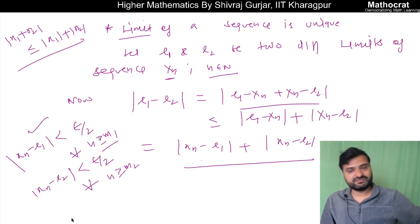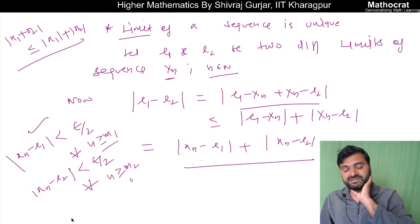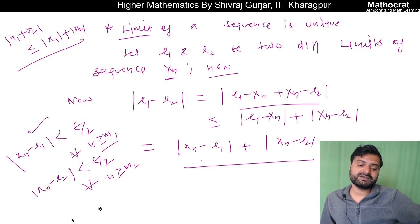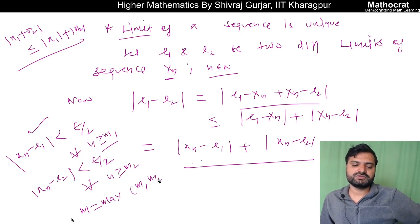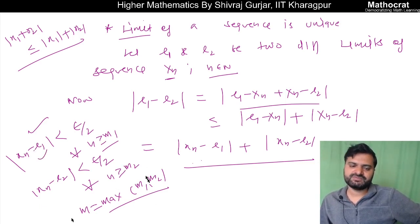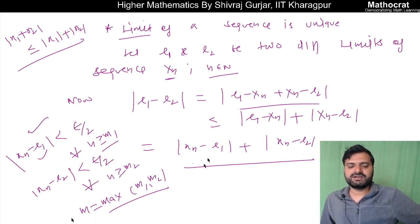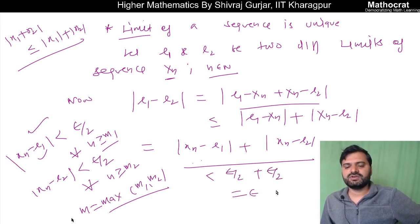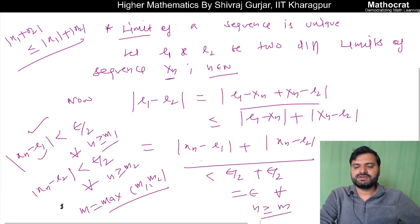The first condition is valid for natural numbers greater than m1, and the second for greater than m2. So if we take a natural number m equal to maximum of m1 and m2, then for all n greater than or equal to m, both conditions are satisfied. So we can write that |xn minus L1| < epsilon/2 and |xn minus L2| < epsilon/2, giving us |L1 minus L2| < epsilon.